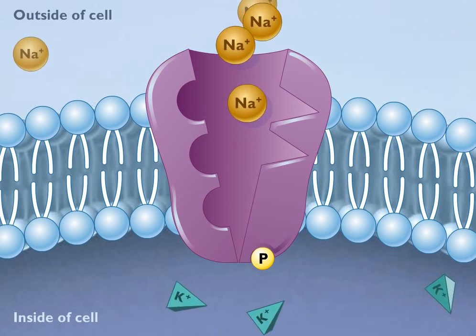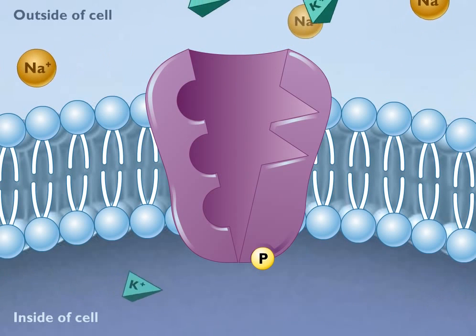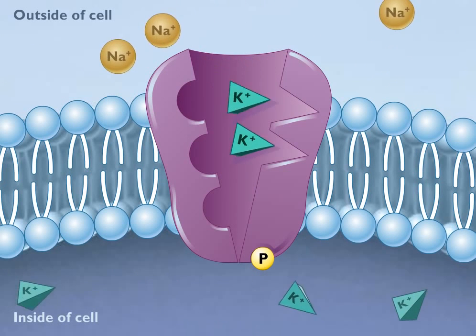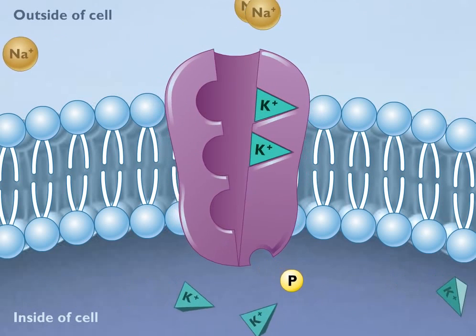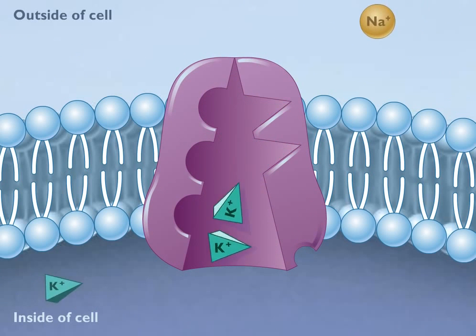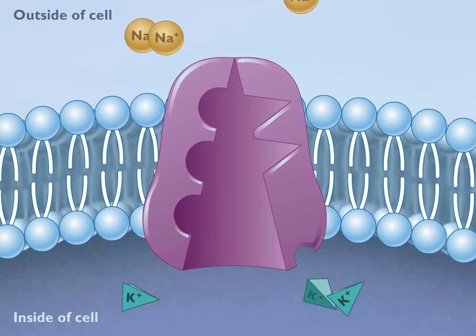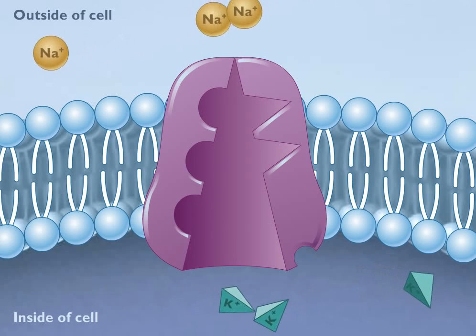The important characteristic of this pump is that both sodium and potassium ions are moving from areas of low concentration to areas of high concentration. That is to say, each ion is moving against its concentration gradient. This type of movement can only be achieved by the constant expenditure of ATP energy.